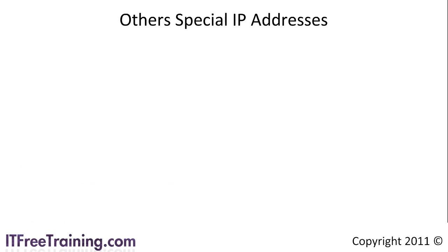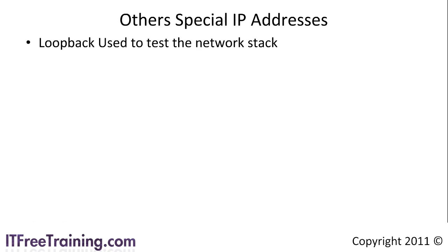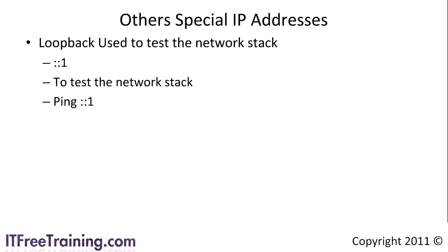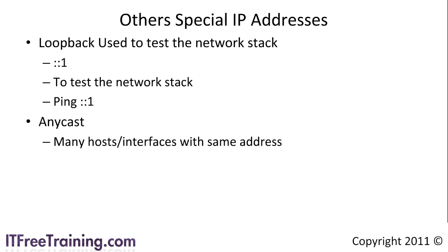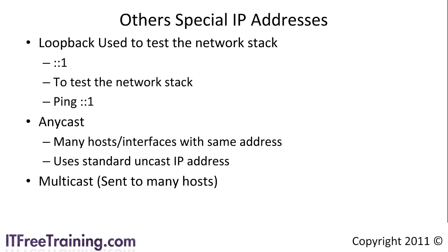There are three additional addresses for IP version 6. The first is the loopback address, used to test the network stack to make sure it is loaded and working. It is simply ::1. To test the network stack from the command line, run the command ping ::1. If you receive a response back, the network stack is working. Note this test only tests that the software is loaded and working — if your network card is not plugged into the network, you will still get a response back. The next address is Anycast. The Anycast address allows many hosts or interfaces to have the same IP address. When you attempt to contact one of these hosts, the traffic will be directed to the host that is closest. The address itself uses a standard unicast address, but your network does need Anycast-compatible routers. Finally, multicast addresses start with FF and any data sent to a multicast address is sent to many different hosts. Multicast is generally used for data streaming.